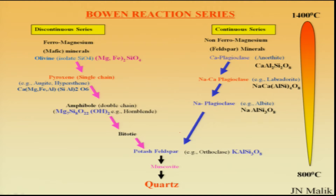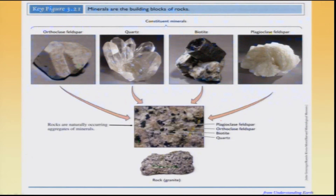Please recall these two series: the discontinuous ferromagnesian series and the continuous non-ferromagnesian mineral series. The combination of these minerals will enable us to identify different types of igneous rocks.